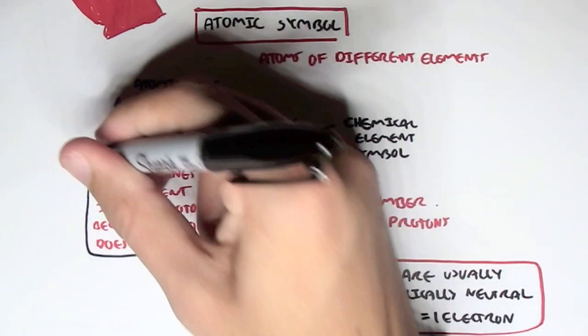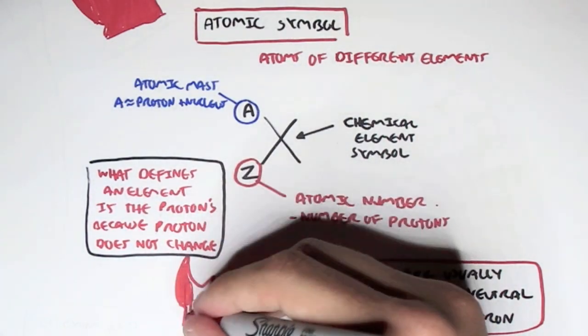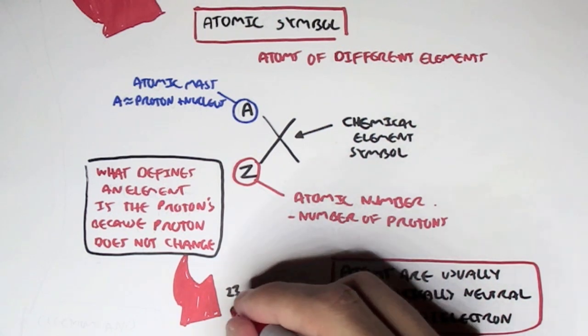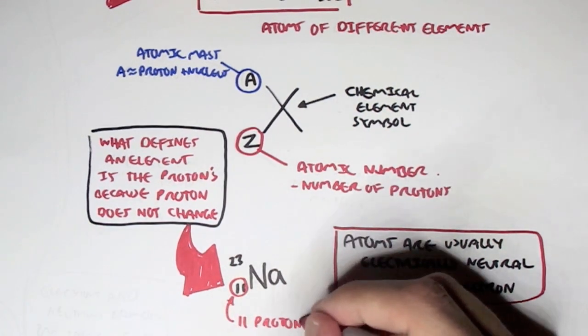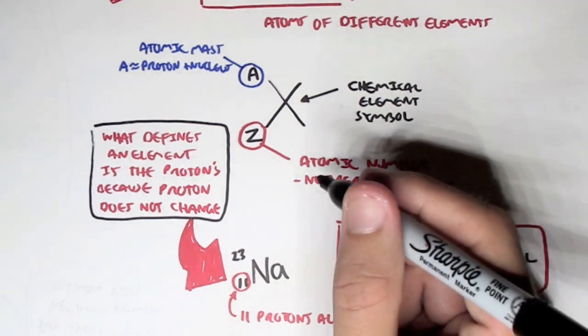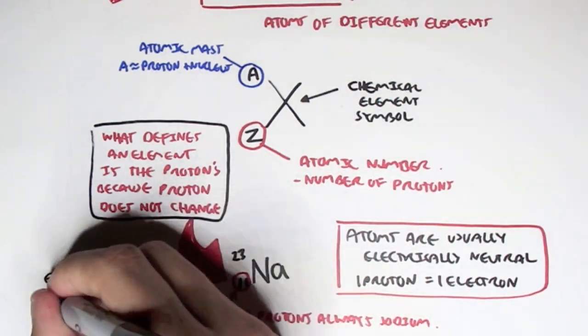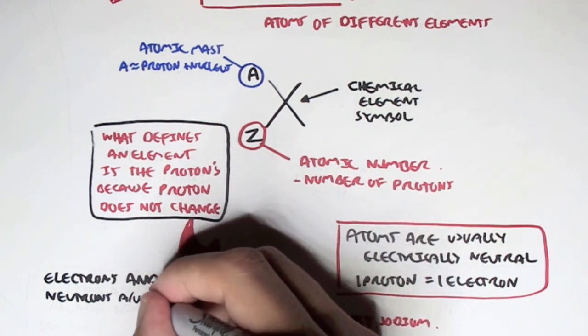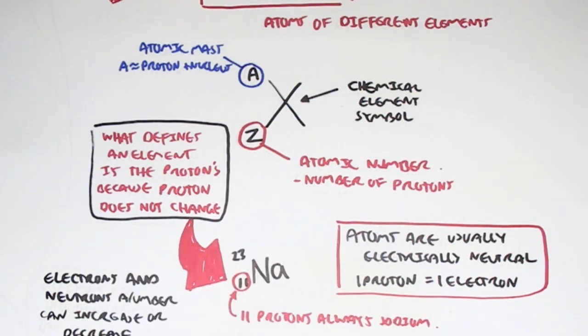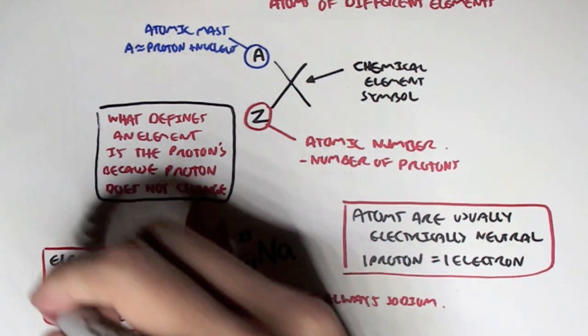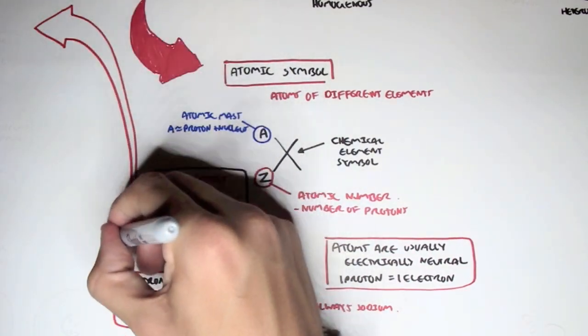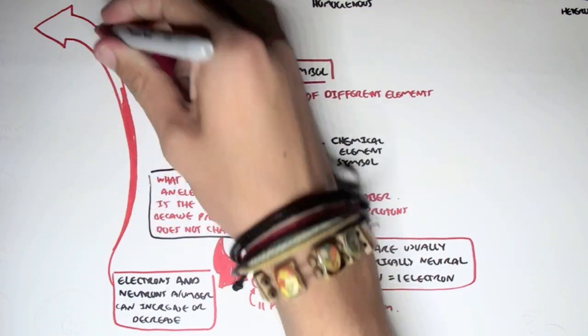So for example, here we have sodium, which has an atomic mass of 23 and an atomic number of 11. And so sodium always has 11 protons, because this is what defines sodium. In an atom, usually for every proton there is an electron. But this can of course change, because electrons and neutrons' numbers can actually increase or decrease. The protons' numbers does not increase or decrease.